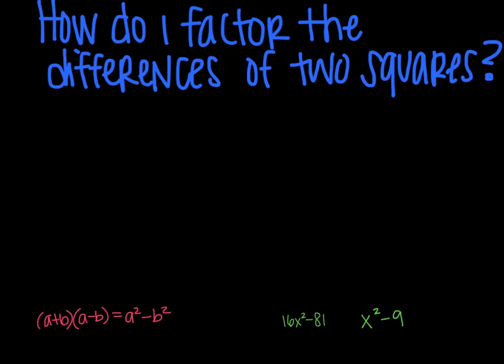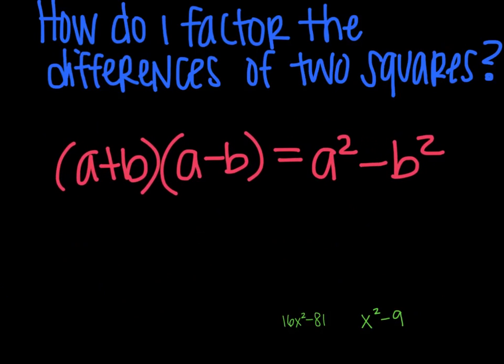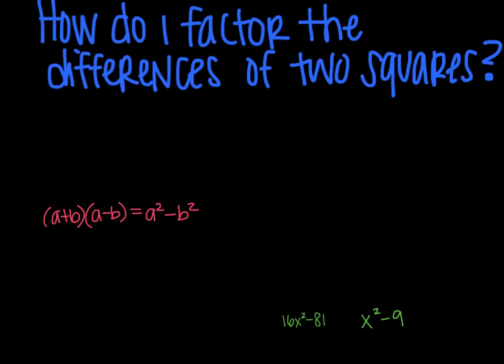The second question is how do I factor the differences of two squares? A difference of two squares is when you have (a+b) and (a-b), and when that happens, you will get your answer to be a²-b² because the middle terms cancel each other out. You can recognize this when you see two perfect squares and there's no other terms involved.